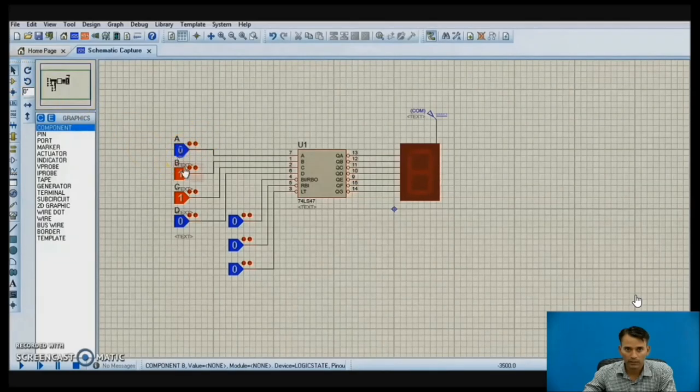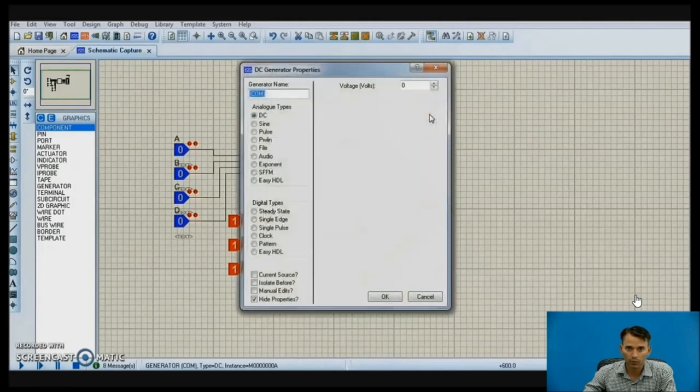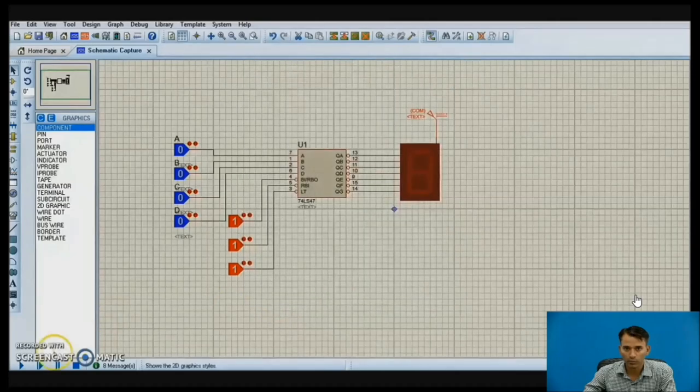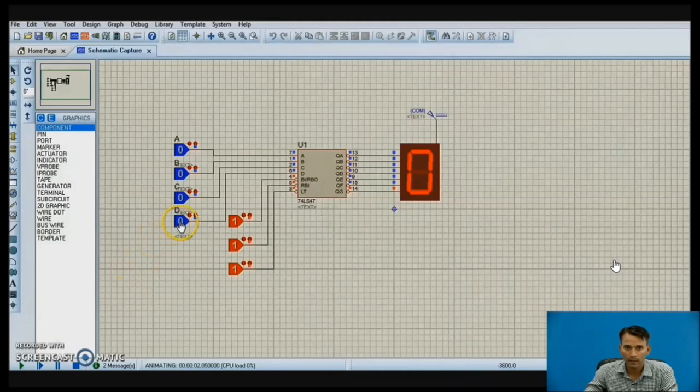Before that, let us make all the inputs at 0000 BCD input. Let us make LT, RBI, and RBO to 1 for normal operation. Let us give 5V to supply common anode. We can start the simulation from the start button. Here you can see as 0000 inputs are there, it is glowing 0.